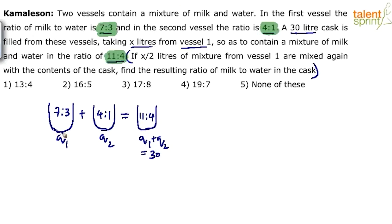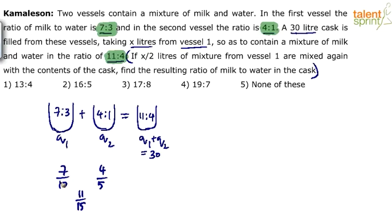Apply the allegation rule using milk concentrations. The concentration of milk in vessel 1 is 7/10, in vessel 2 it is 4/5 (i.e., 4 out of 5 parts), and in the mixture it is 11/15 (11 out of 15 parts). Applying cross differences: q1 corresponds to 4/5 minus 11/15, and q2 corresponds to 11/15 minus 7/10. We also know q1 plus q2 is 30.